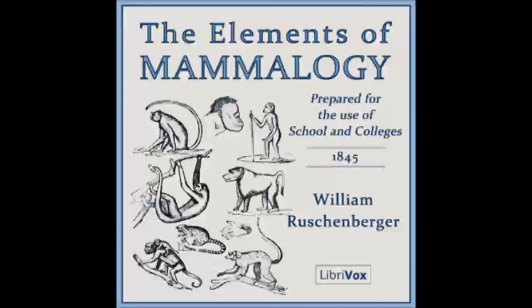The mammalia are born alive and in the early period of life are nourished by the mother with milk, which is formed in glands called mame or teats. Animals of this class alone are provided with these organs, and for this reason they are called mammalia, or mammiferous animals. Circulation and respiration are carried on in the same manner as in man. In all the mammalia the blood is warm, the heart has four distinct cavities, two ventricles and two auricles. The lungs are always composed of a great number of very small cells, and do not permit the air to pass from them into different parts of the body, as is the case in birds.